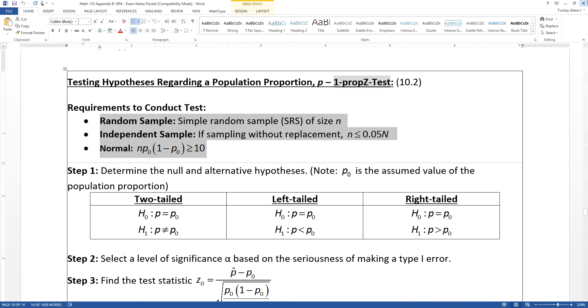So we need the sample to be random. We need our sample to be independent. In the case of proportions, we need n to be less than or equal to 0.05 times capital N, where capital N is the population size and little n is the sample size. And then we need to check normality. We need to check that n times P₀ times (1 - P₀) is greater than 10.